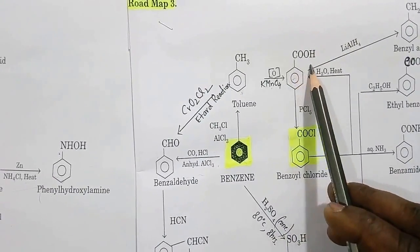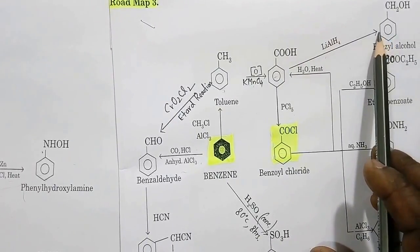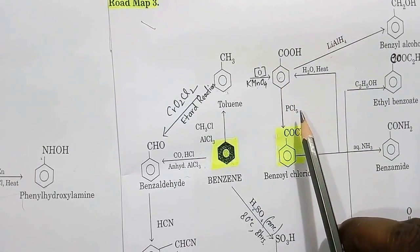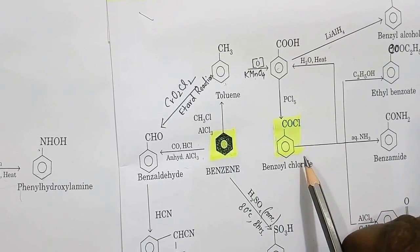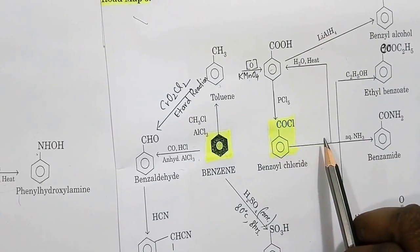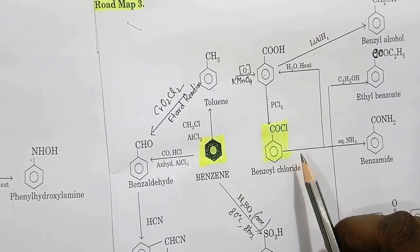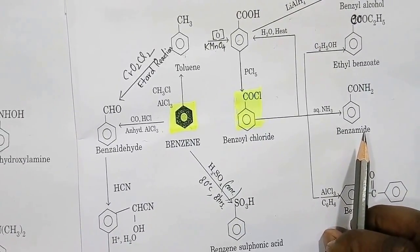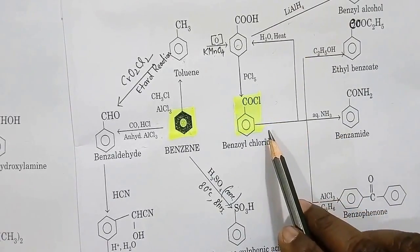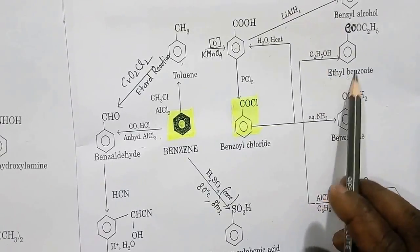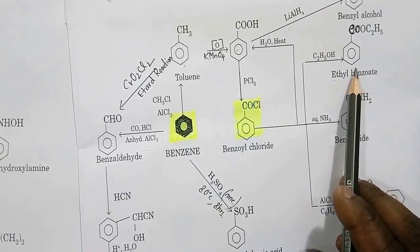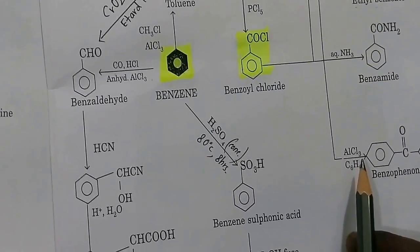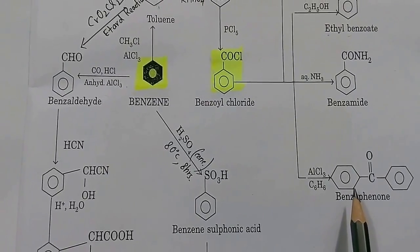The acid can be reduced to alcohol, and the alcohol is oxidized back to acid. Benzoic acid when treated with PCl5 gives benzoyl chloride. Benzoyl chloride can be hydrolyzed to get benzoic acid again. Treating benzoyl chloride with aqueous ammonia gives benzamide (an amide compound). Treating benzoyl chloride with ethanol gives ethyl benzoate. Benzoyl chloride treated with benzene in presence of anhydrous AlCl3 gives benzophenone — that is the Friedel-Crafts reaction.